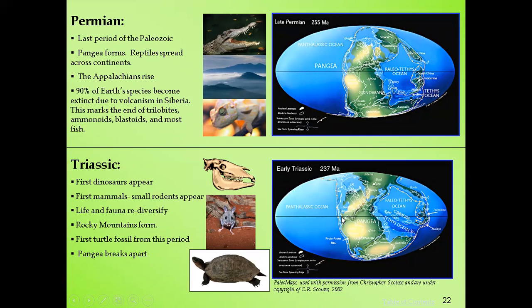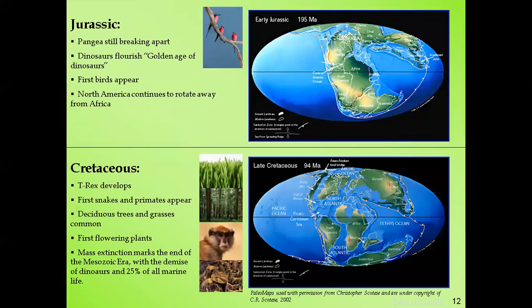The next period is the Jurassic. At this point, Pangaea was still breaking apart. The dinosaurs flourished — the Jurassic is also called the golden age of dinosaurs.